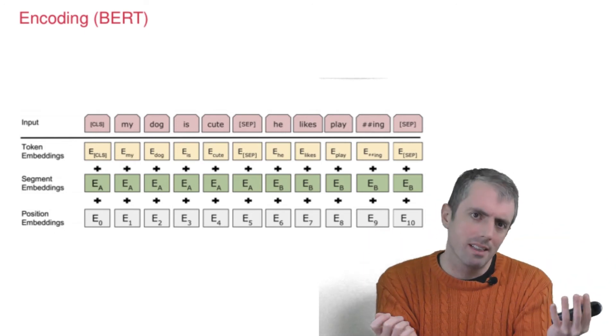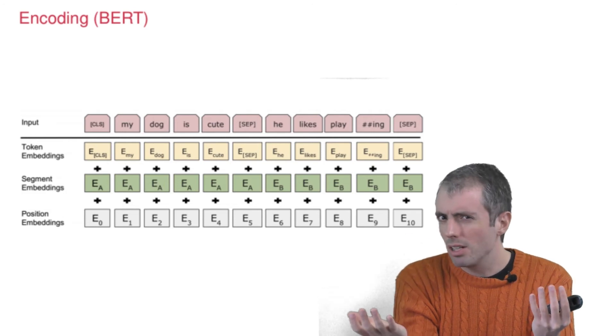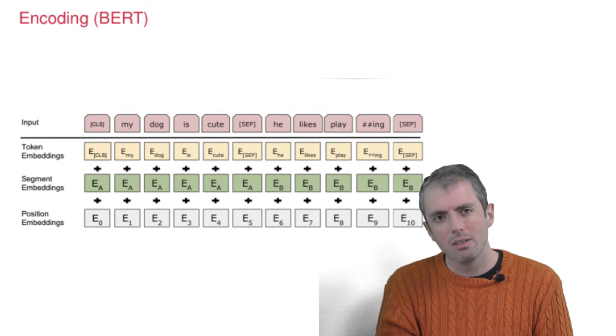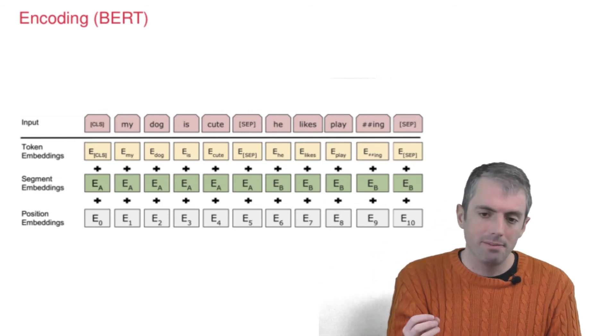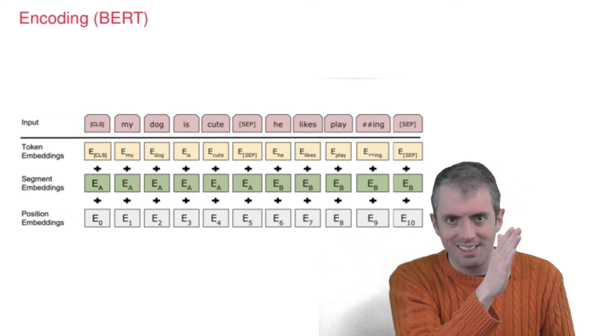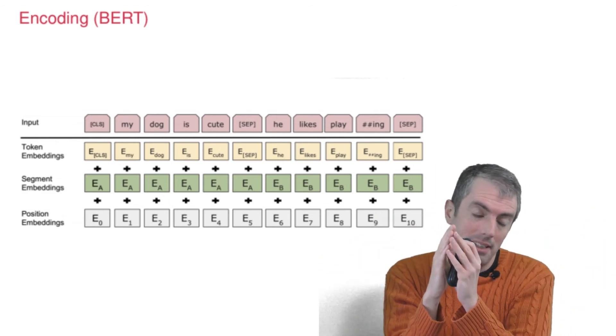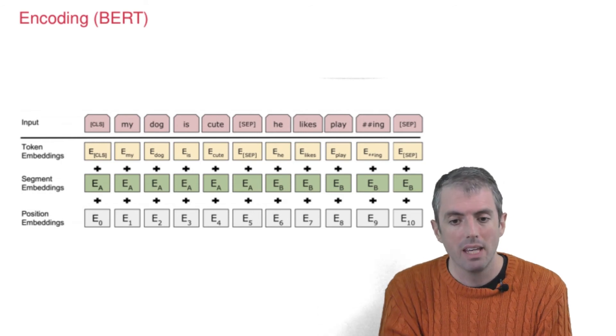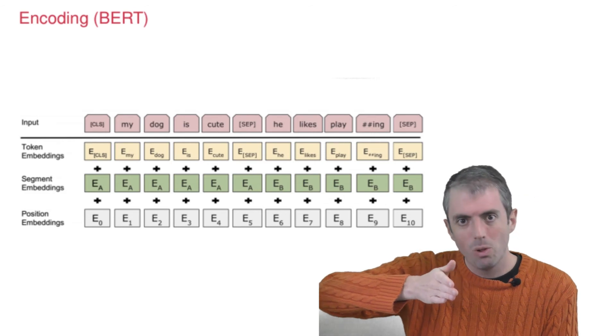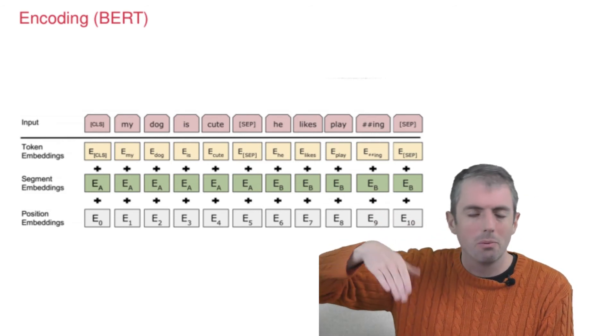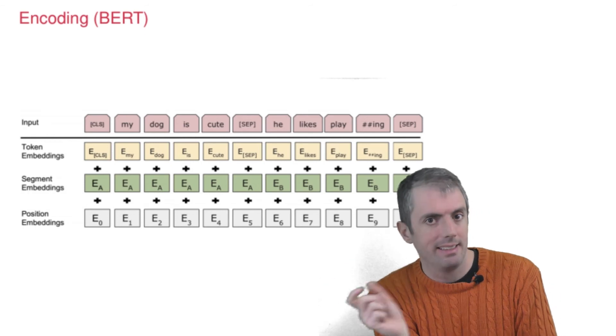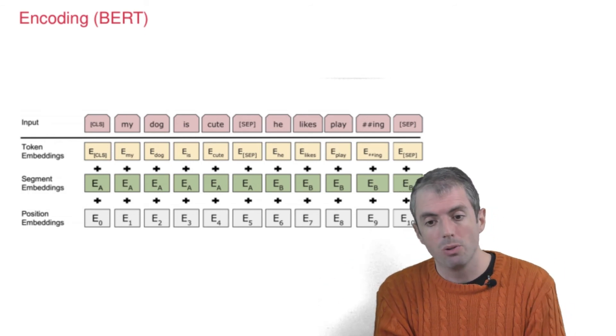You don't want to treat the source sentence and the question the same. So you want to have different embeddings for the segments. So this is the layer in green here, where you have a very specific embedding for the first part of the encoding and a separate embedding for the second part of the encoding. Then you also have position embeddings for the first word piece, the second word piece, the third word piece, and so on to capture any position-specific effects of your input.